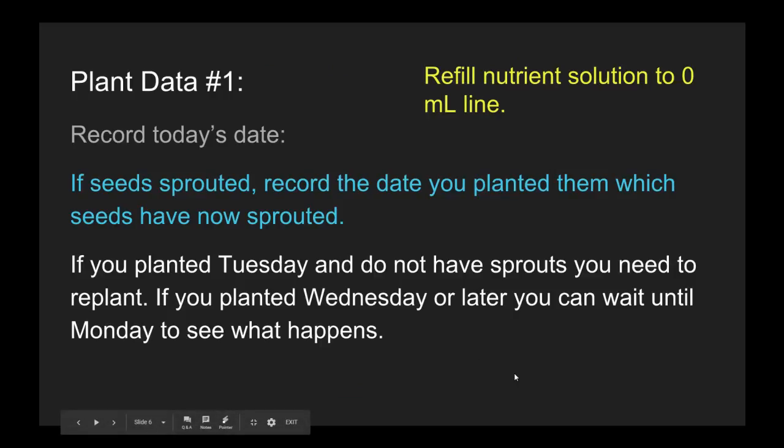And then the data piece: record today's date. Make sure you refill the nutrient solution to your zero-fill line. We'll start on Monday recording water usage. If your seeds have sprouted, record the date that you planted them — so if it was Tuesday the 6th, record the 6th; if you planted Wednesday, it's the 7th.